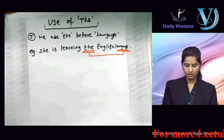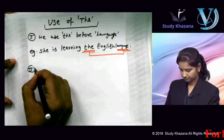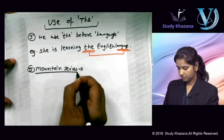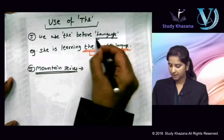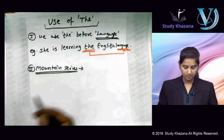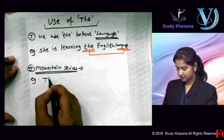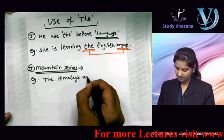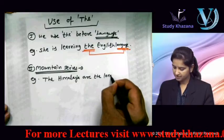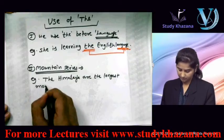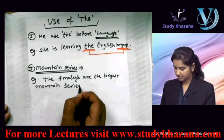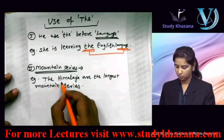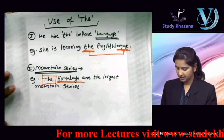When we are talking about mountain series, tab bhi hum article 'the' ka prayog karte hain. For example: 'The Himalayas are the longest mountain series.' The Himalayas — agar aapko geography ka knowledge hoga, Himalayas is a mountain series, aur isliye humne 'the' ka prayog kiya.